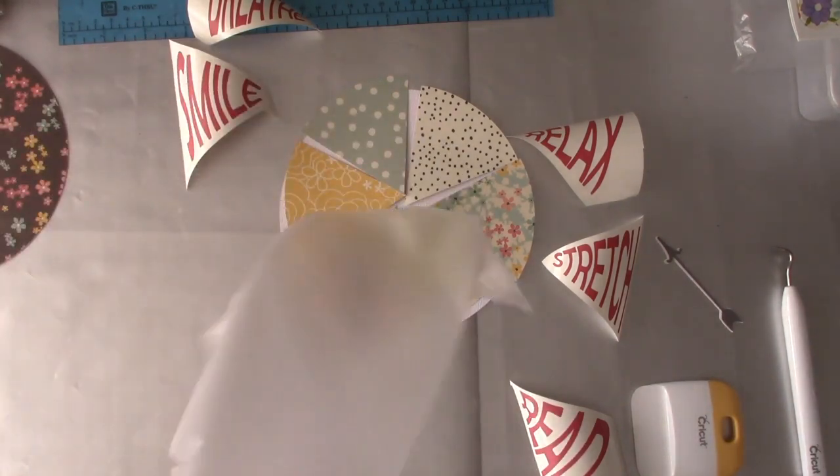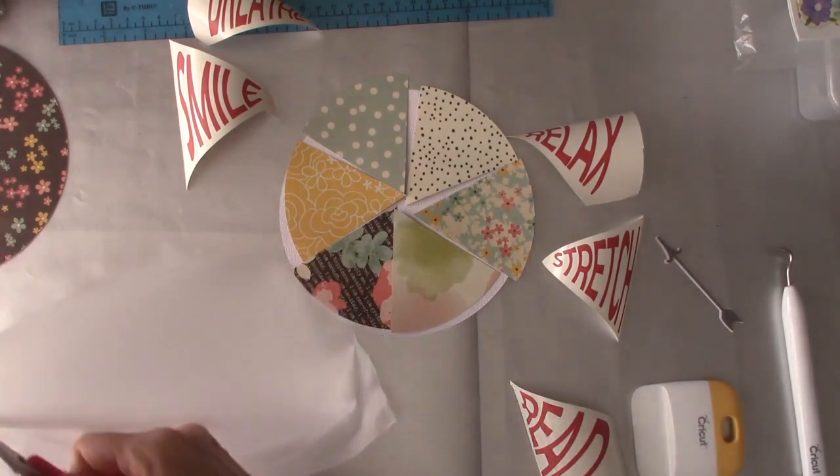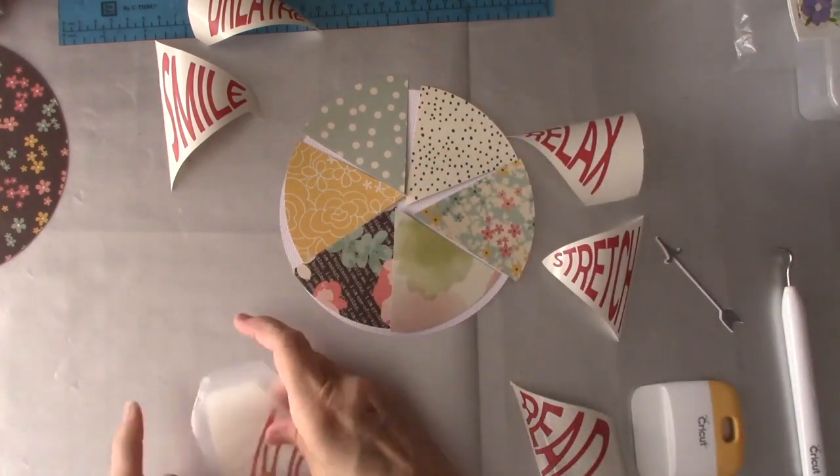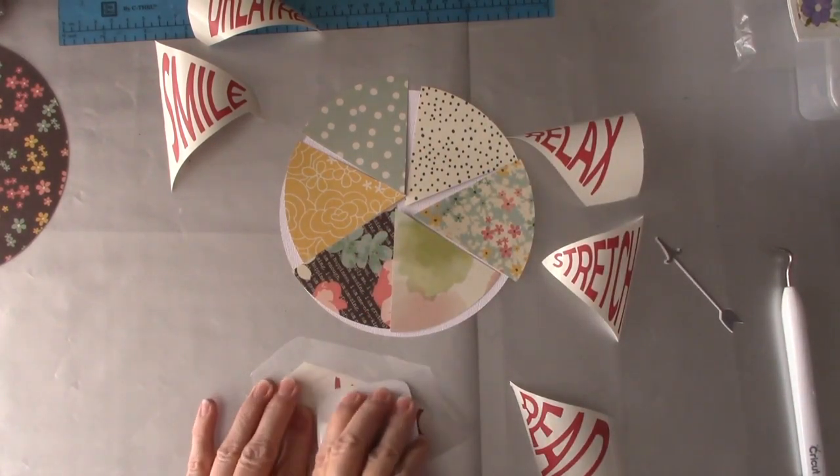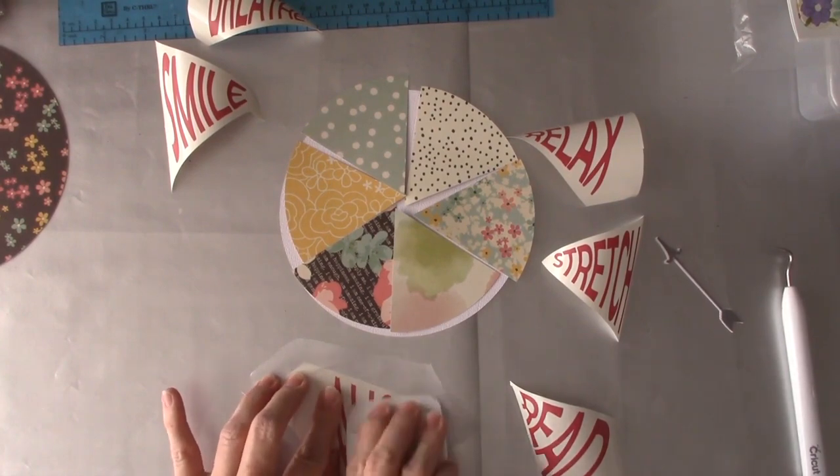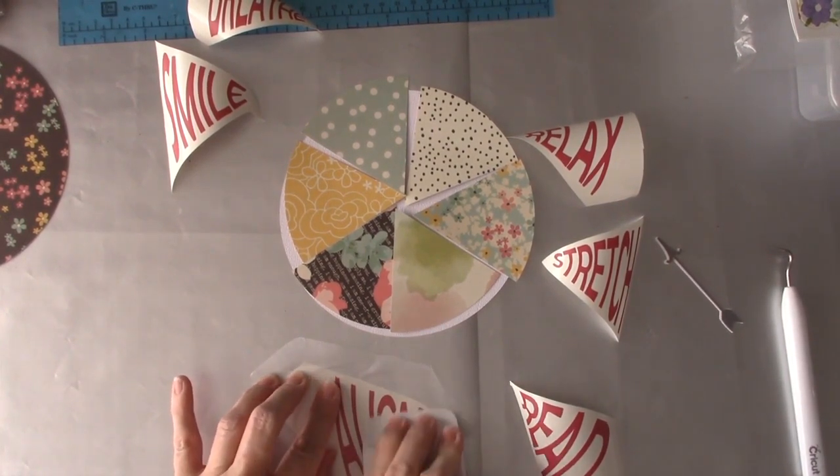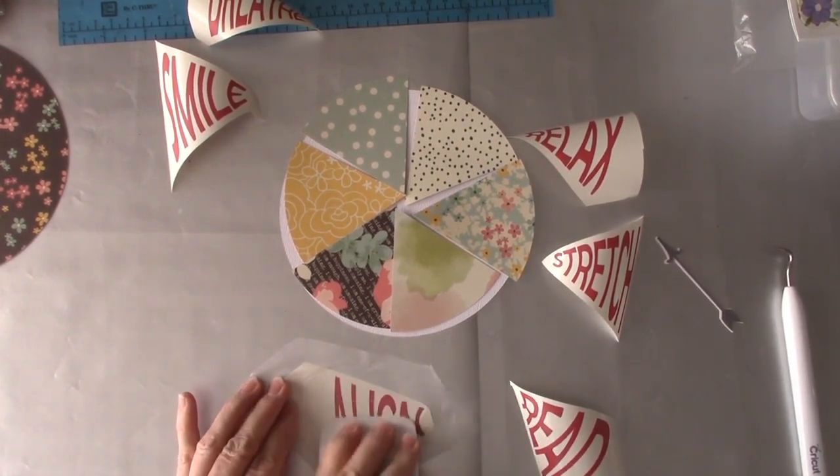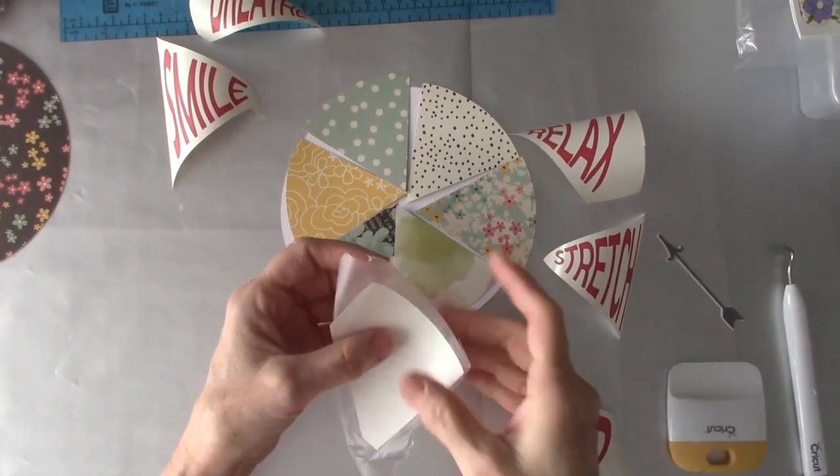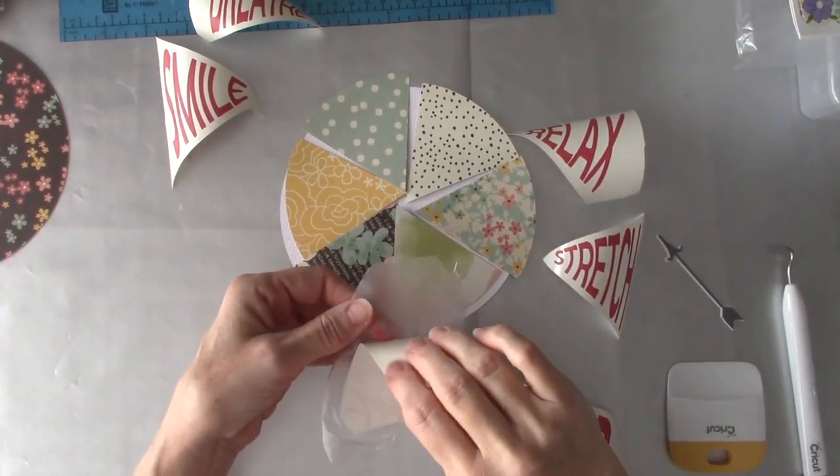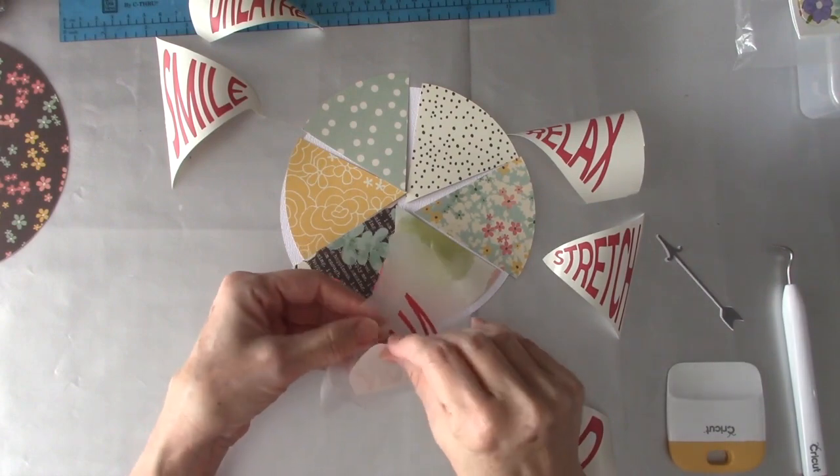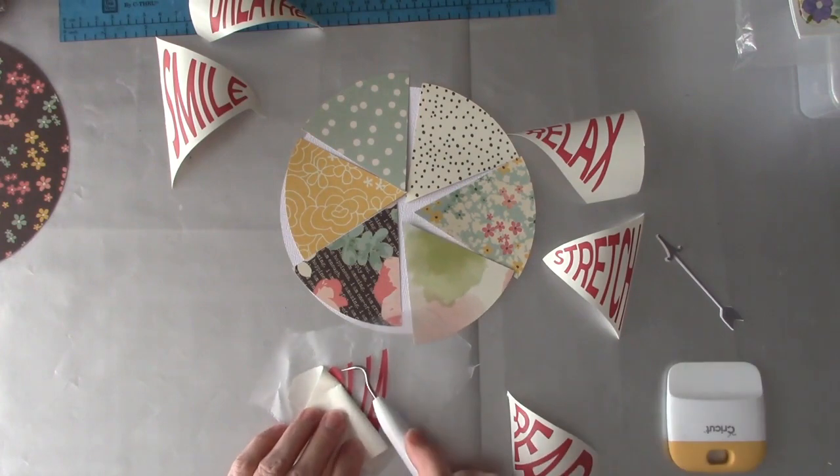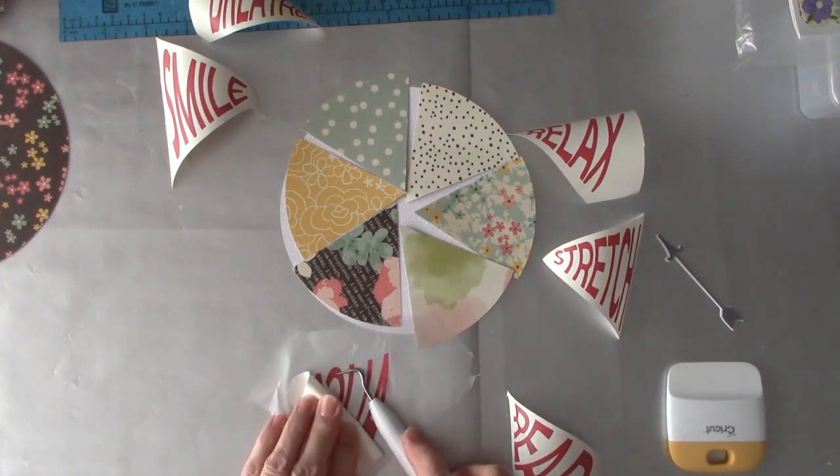I'll just set that aside, now I'll just burnish this down. I'm just going to remove the backing. You kind of remove it more at an angle, it comes off a little bit better.